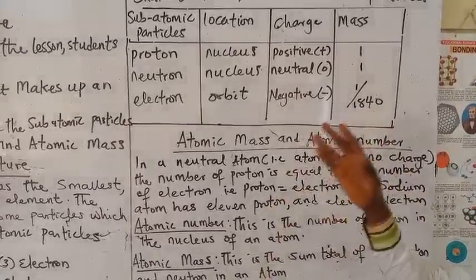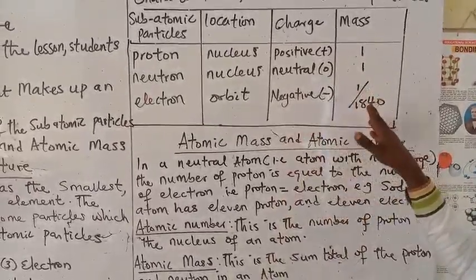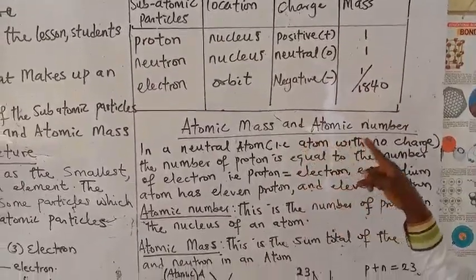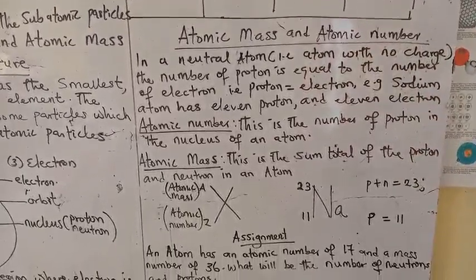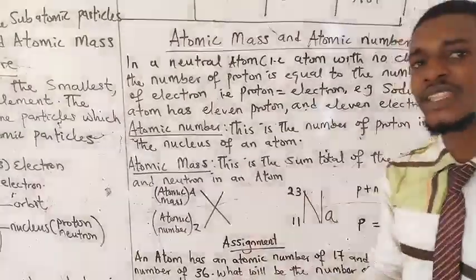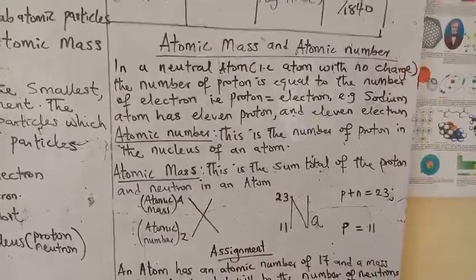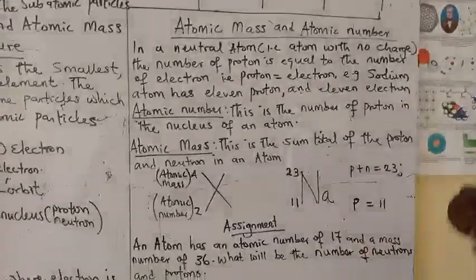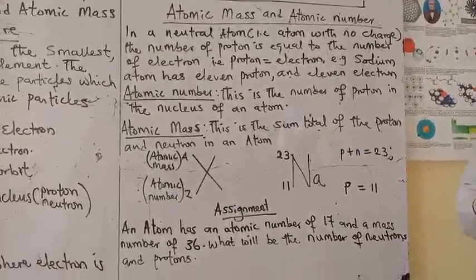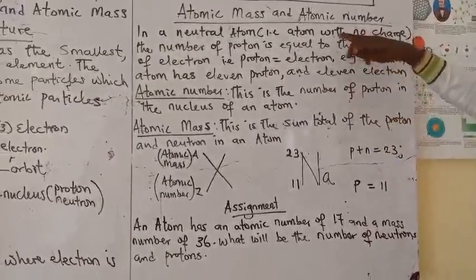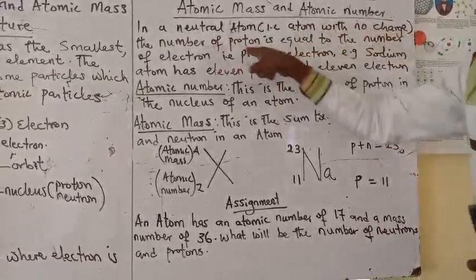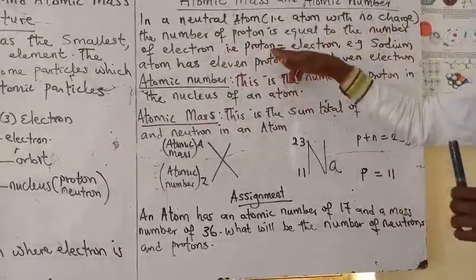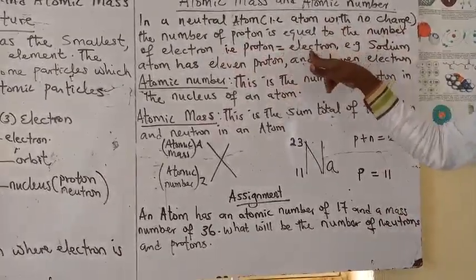Now let's look at how these subatomic particles affect an atom — that takes us to the atomic mass and atomic number, because these subatomic particles are what give the characteristics of the atomic mass and the atomic number. In a neutral atom, that is an atom that has no charge, the number of protons is equal to the number of electrons.